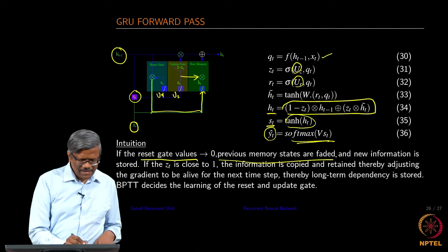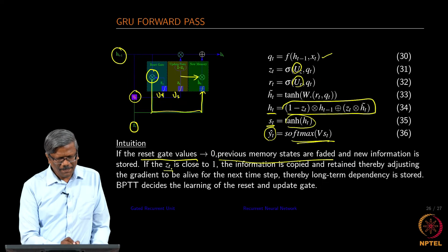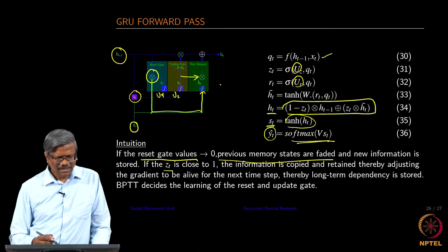That is what happens in this reset gate. And if the z_t value is close to 1, the information is copied and we are going to be keeping that.